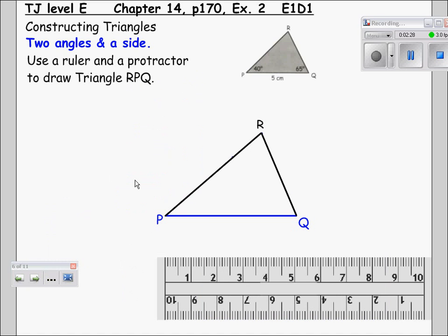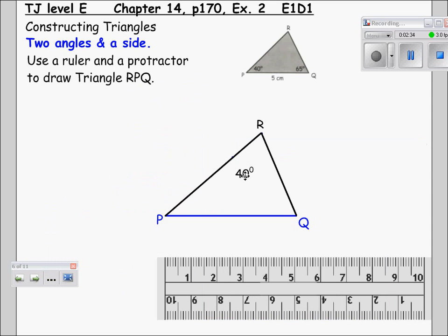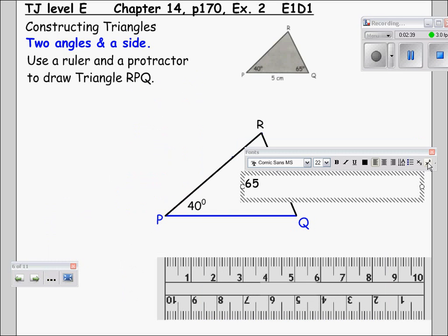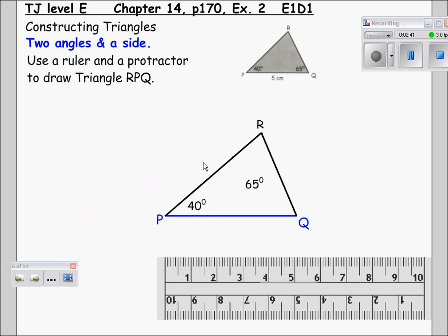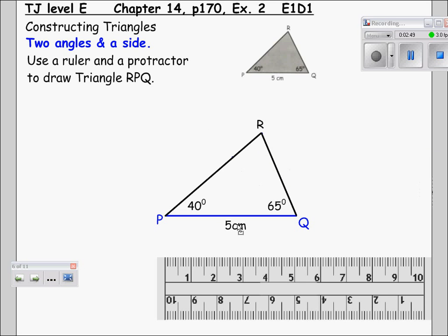We now have triangle PQR. However, we are still missing some vital information. Mark in angle RPQ at 40 degrees and angle RQP at 65. Also mark in the size of your line PQ at 5 centimeters.